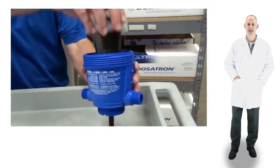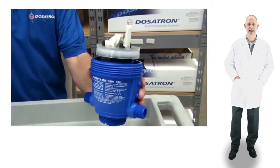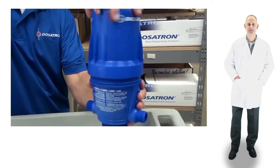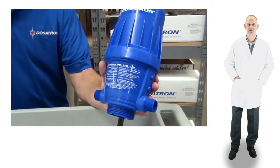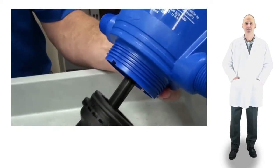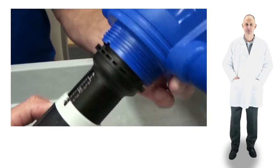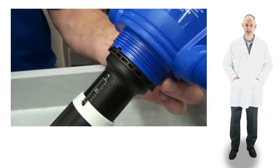Insert the piston into the body and replace the bell housing, hand tight. Align the notches in the lower part of the body with the teeth on the top of the injection stem assembly and reinstall the nut hand tight.